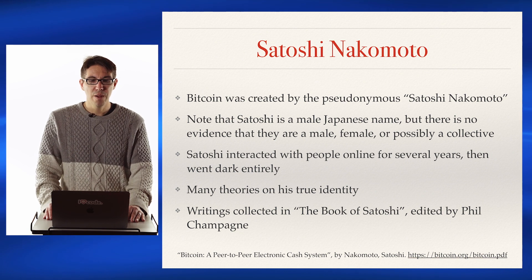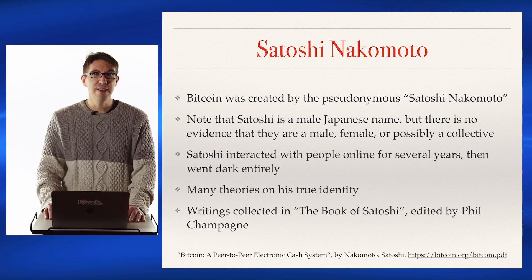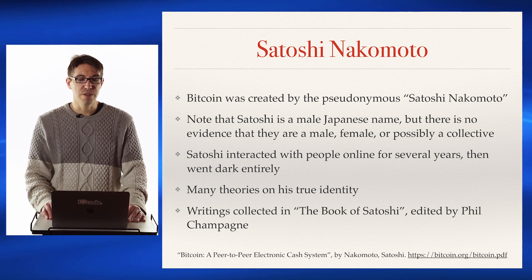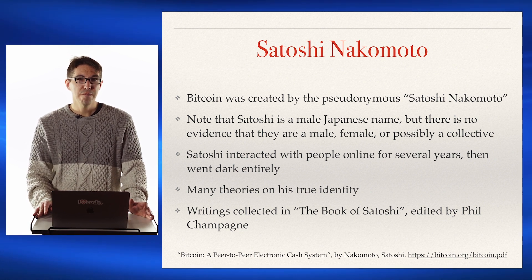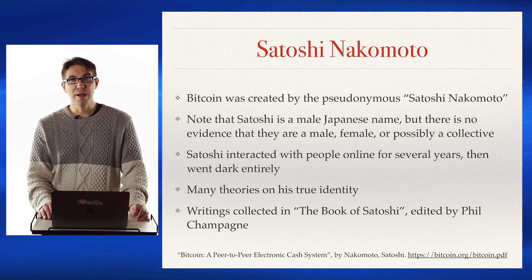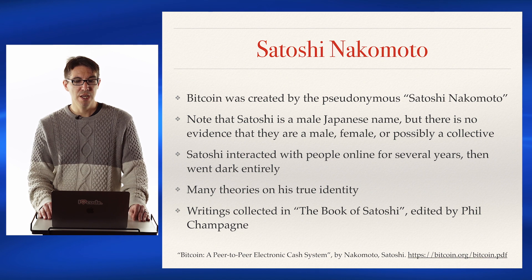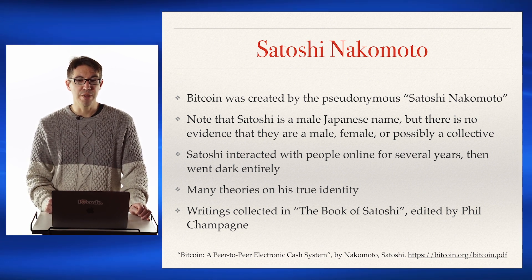So who's behind Bitcoin? We're not exactly sure. Bitcoin was created by someone with the pseudonym Satoshi Nakamoto — a male Japanese name, but there's no evidence they're male, female, some sort of collective, or even Japanese. We know very little about Satoshi Nakamoto. Despite a few people claiming to be them or know who they might be, there has been no firm definitive evidence. Satoshi interacted with people online for a few years, then went entirely dark, and nobody knows who exactly he, she, or they are. If you're interested in reading more, there's a great book called The Book of Satoshi, edited by Phil Champagne, which collected the most important things Satoshi said online during the early days of Bitcoin.